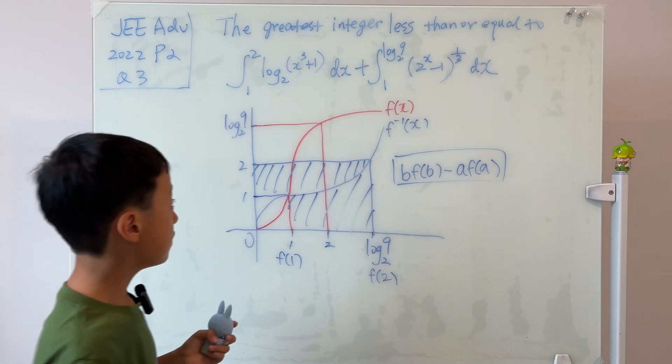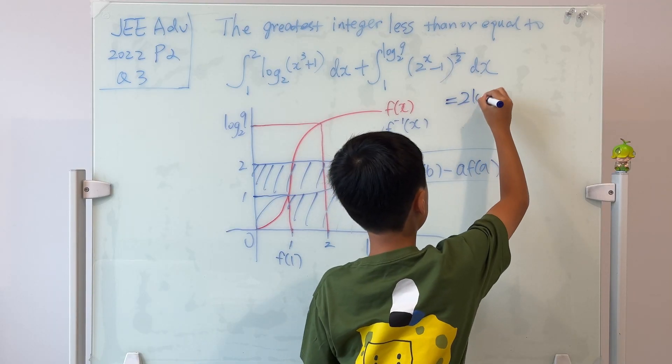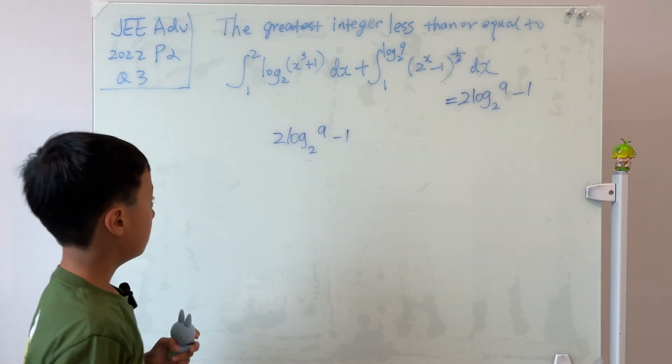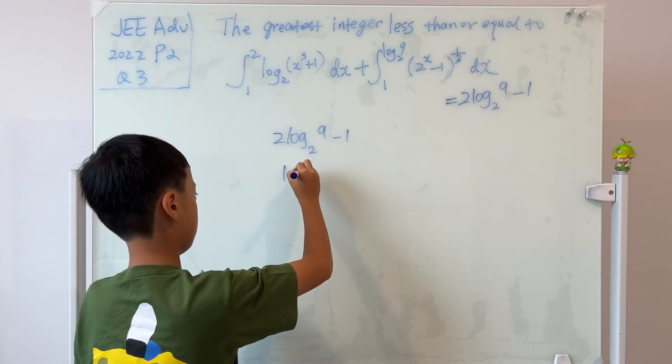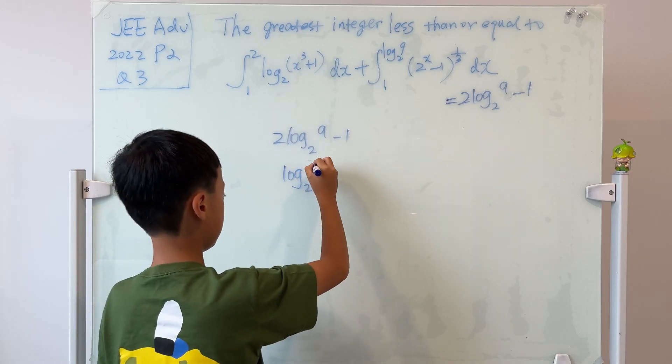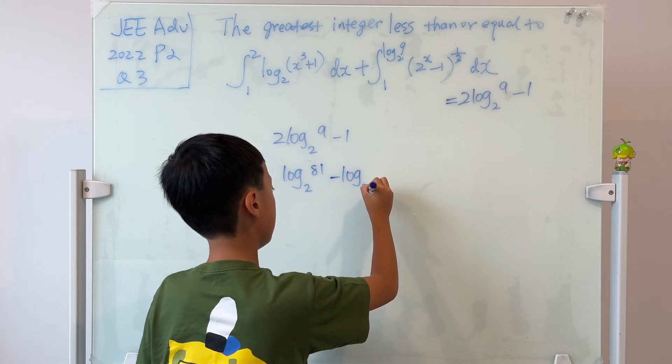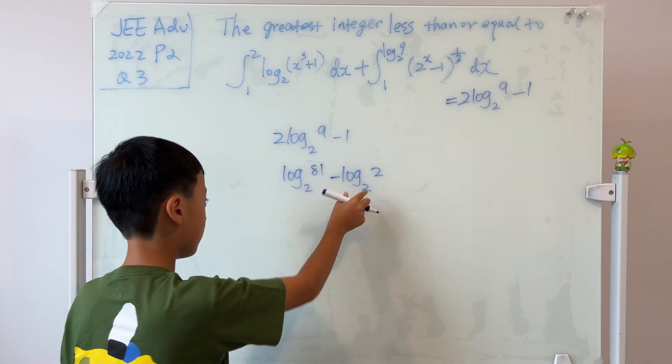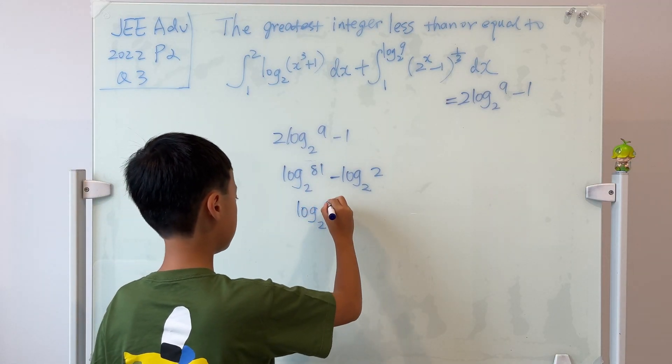Well, since I've already proved this 2 times, we can conclude that this is actually equal to 2 times log₂(9) minus 1. We know that 2 log₂(9) is just log₂(9²), because we can put this to the power. So it's 81 minus 1 is just log₂(2), and 2 to the power of 1, which is 2. And since this is a subtraction of logarithms, then we know that it's equal to log₂(40.5).